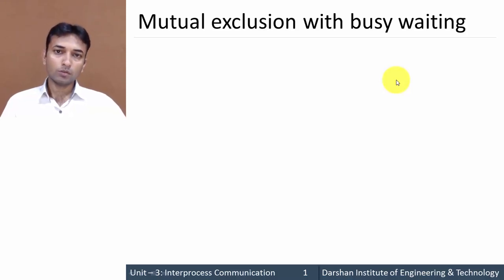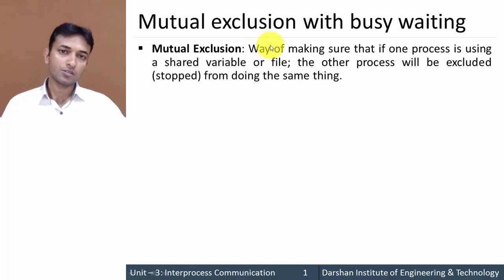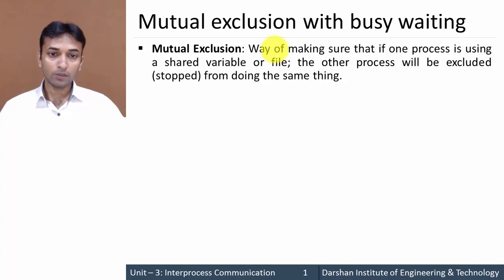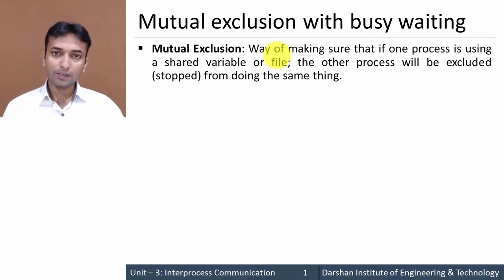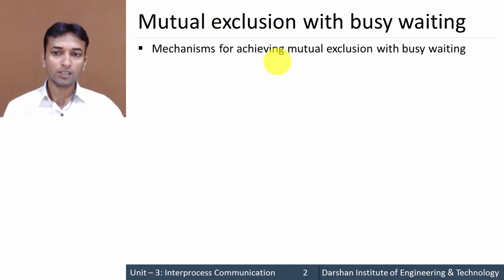In our previous video we learned what is mutual exclusion. Let us revise: mutual exclusion is a way of making sure that if one process is using a shared resource, variable, or file, at the same time the other process will be excluded or stopped from doing the same thing. It is a way of giving surety that at a particular time only one process is using the shared resource or shared file. This way is nothing but a mechanism.